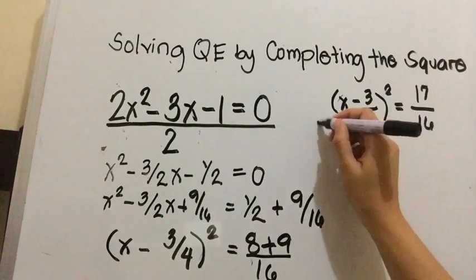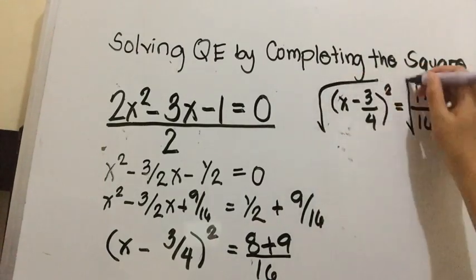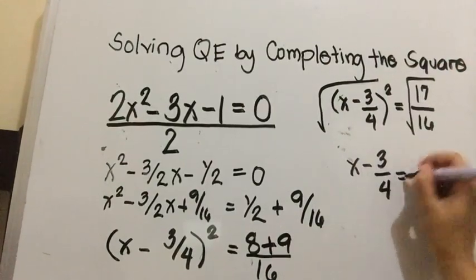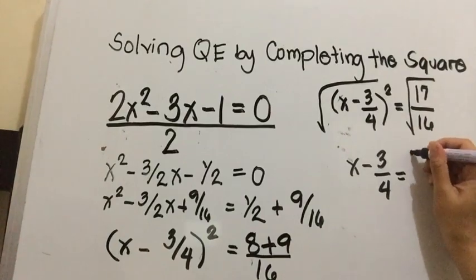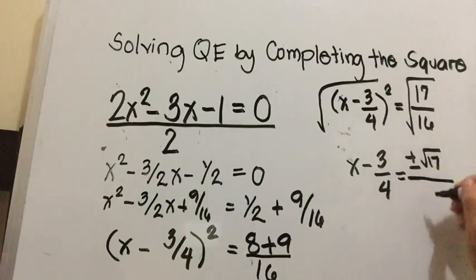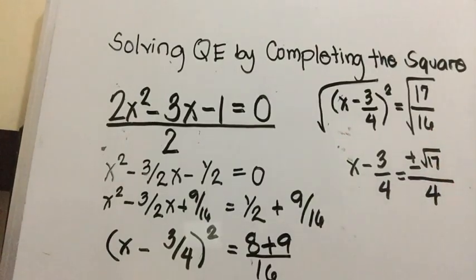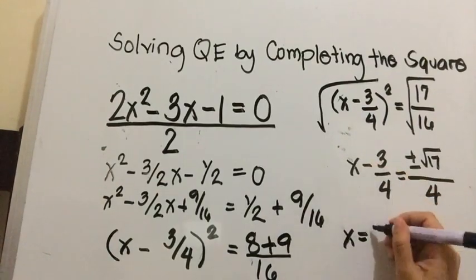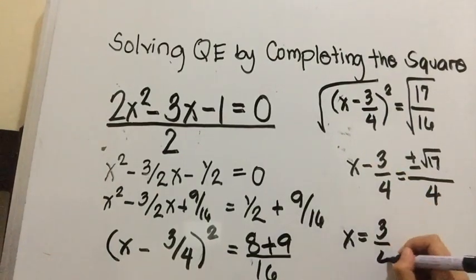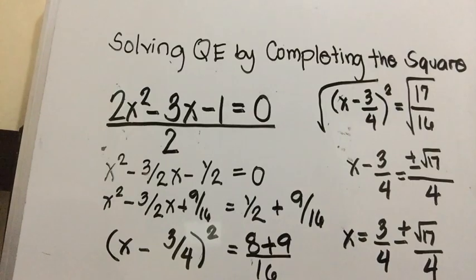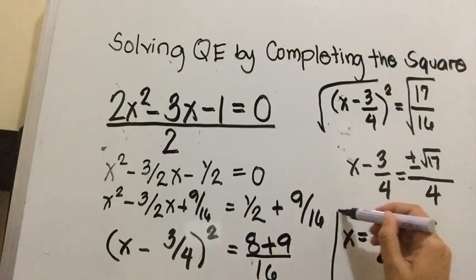Then we get the square root of both sides. So we have x minus 3 fourths equals positive and negative square root of 17 — since 17 is irrational — all over the square root of 16 which is 4. Then simply transpose the 3 fourths: x equals positive 3 fourths plus and minus square root of 17 all over 4. This is our final answer.